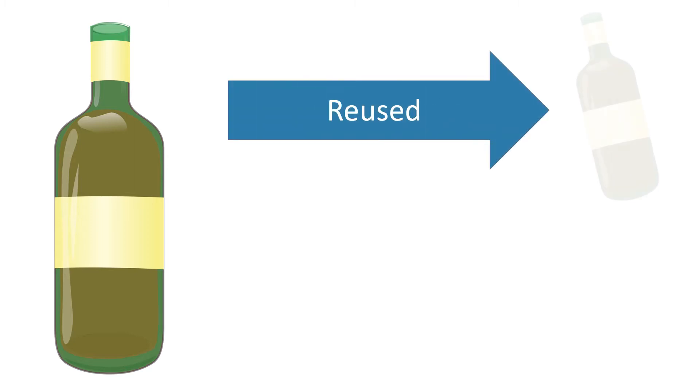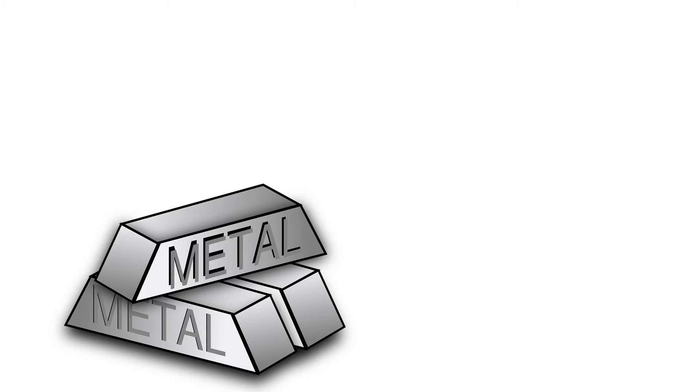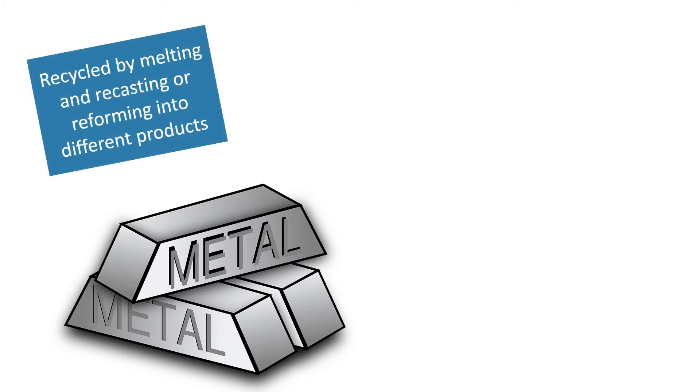To try and reduce our impact on the environment, we can reuse products such as glass bottles. If the glass bottle cannot be reused, it can be crushed and melted to make different glass products. Metals can be recycled by melting and recasting or reforming into different products.